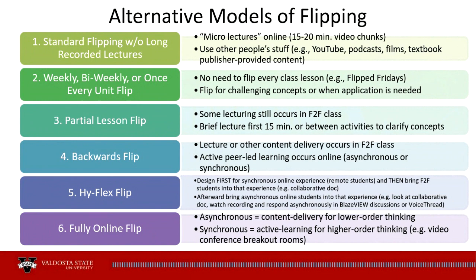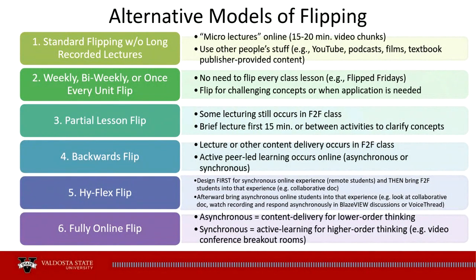Number six is the fully online flip - which is actually what I'm doing right now. For the asynchronous part of our webinar, you watched the five-minute video - that was lower-order thinking, just recall. Now in the synchronous part of our class, you do the active learning for higher orders of thinking - breakout rooms, and that assessment we did at the beginning. In many ways, what I'm doing is a combination: I'd say I'm a six, a three, and a one right now. And that's the thing - these models are not mutually exclusive. They all use the flip concept and show how it can change your understanding of how you teach.